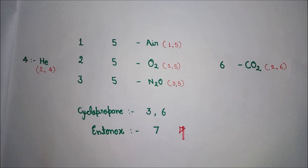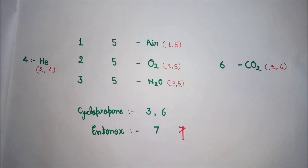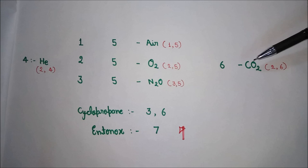Oxygen combined with carbon makes Carbon Dioxide, which is heavier than oxygen. Since oxygen has 5 in its pin index, Carbon Dioxide — being heavier — gets a higher number. So instead of 5, it becomes 6, giving CO2 a pin index of 2,6.